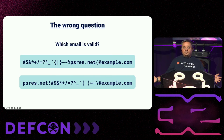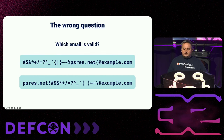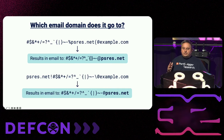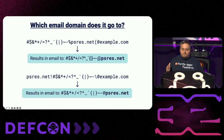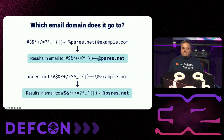Here are two email addresses. You might be wondering which one is valid — that's a typical question asked in an email presentation. However, it's the wrong question for this talk. The question you should be asking is: which domain do they go to? You might expect both emails to go to example.com, but that's not what happens — they both go to psres.net. Remember how I said predicting the email destination is extremely difficult? This is just the tip of the iceberg.